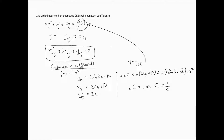Comparing coefficients of x gives: 2bC + cD = 0. Since we already know C = 1/c, we can solve for D. For the constant terms, we get: 2aC + bD + cE = 0. So by this method we can calculate values of C, D, and E, giving us a quadratic particular integral that satisfies the differential equation.